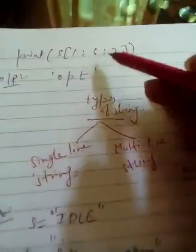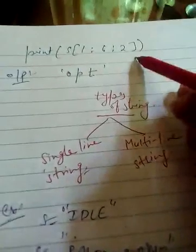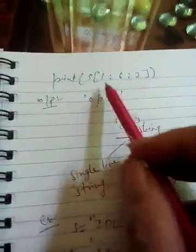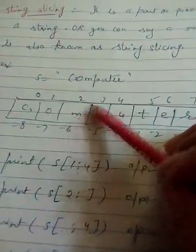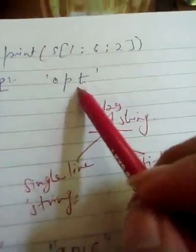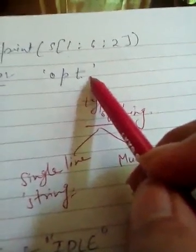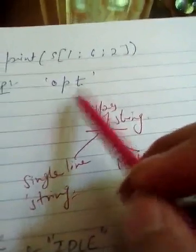The next variation is passing a step value, just as in the range function. For s[1:6:2], initial value is 1, final value is 6, and step is 2. At position 1 there is 'O' — printed. Position 2 ('M') is skipped. Position 3 ('P') is printed. Then 'T' is printed. The next step would exceed the limit, so the final output is O, P, T.